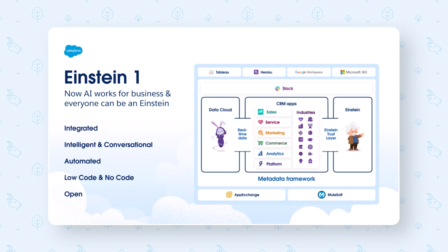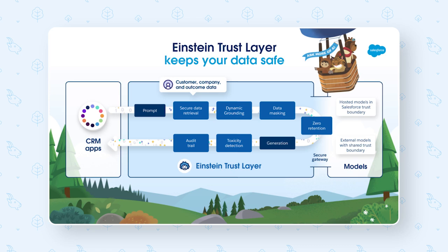And thanks to our open ecosystem, you can build those apps with customizations available through the AppExchange. Most importantly, the Einstein One platform is built on trust. The Einstein Trust Layer allows organizations to benefit from generative AI without compromising their customer data. It helps you increase productivity, deliver better customer experiences, improve customer relationships, and ultimately drives business value.